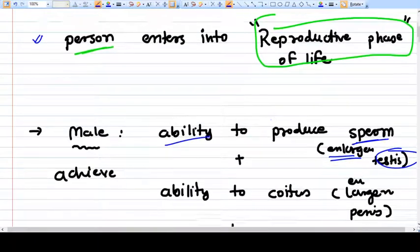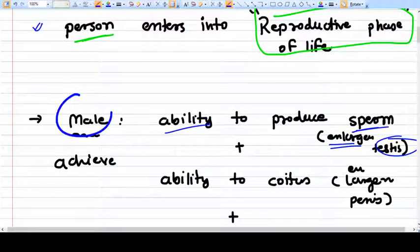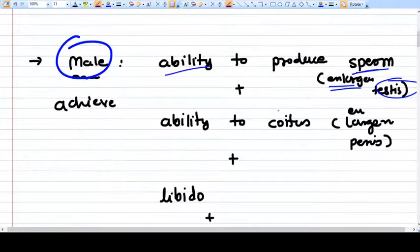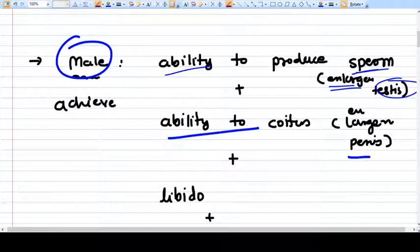In males, the ability to produce sperm is developed. The testes will get enlarged, there is growth in testes, spermatogenesis starts, ability to do coitus, and enlargement of penis.